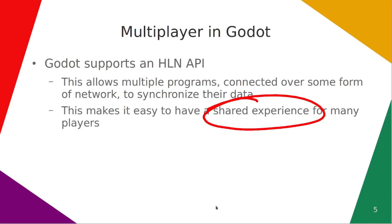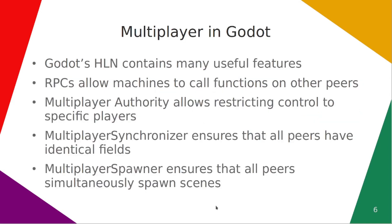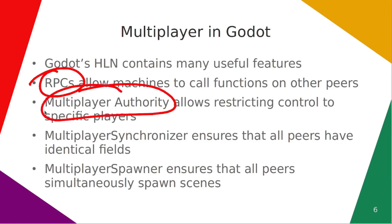This is how many things like Team Fortress work. Godot's HLN contains many useful features. RPCs, or Remote Procedure Calls, allow machines to call functions on other peers. Multiplayer Authority Tracking allows restricting control to specific players. Multiplayer Synchronizers ensure that all peers have identical fields when set to watch those fields. And Multiplayer Spawner — a form of Synchronizer — ensures that all peers will simultaneously spawn scenes. Between these, you have basically everything you need for most modern networking games, and plenty of extensibility.